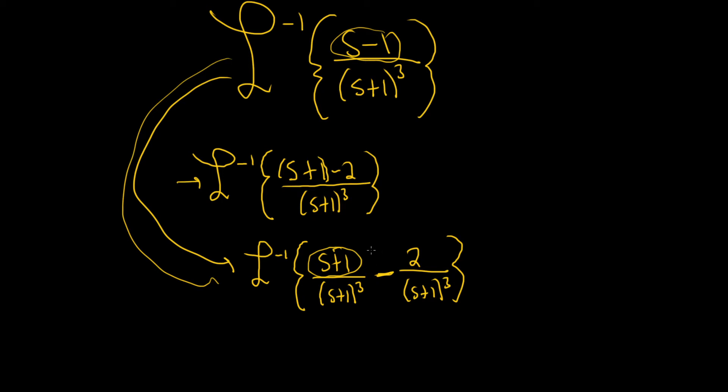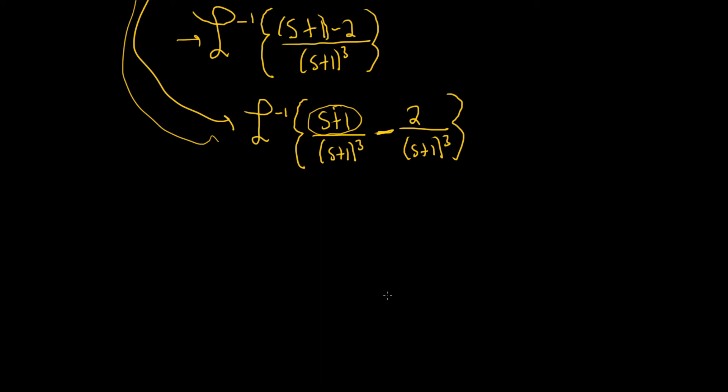So you put the s plus 1 down. You want it to be a minus 1, so you just subtract 2 now. And now you do get some cancellation. So we have the inverse Laplace of 1 over parentheses s plus 1 squared minus 2 over s plus 1 cubed.